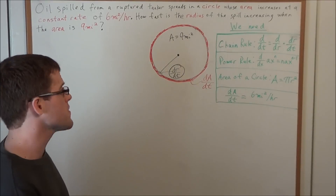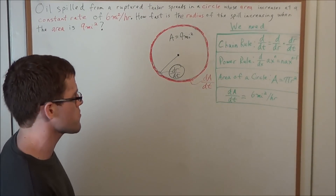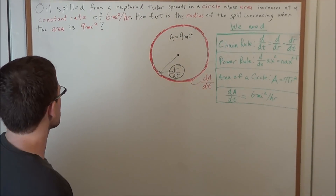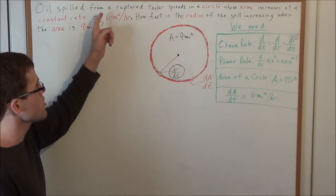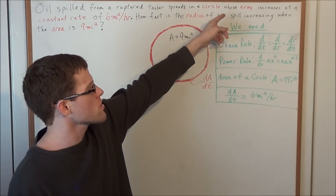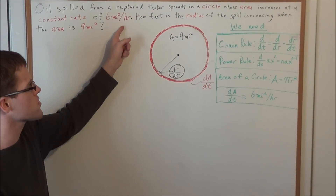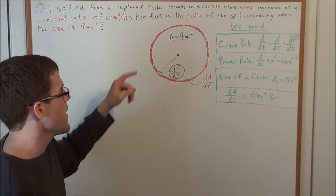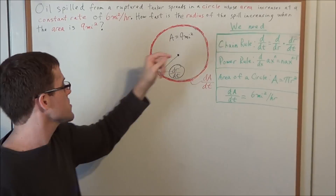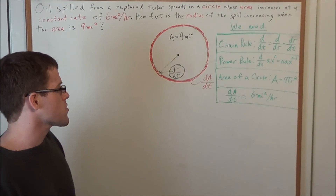Hello YouTube students, my name is Vincent and today I want to take a look at related rates. In particular, I want to look at the problem: oil spilled from a ruptured tanker spreads in a circle whose area increases at a constant rate of 6 miles squared per hour. How fast is the radius of the spill increasing when the area is 9 miles squared?